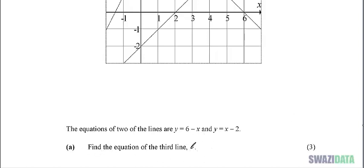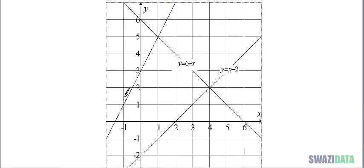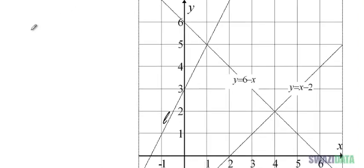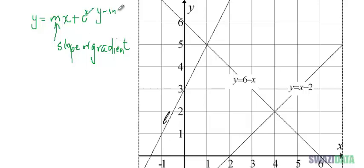So we need to find the equation of line l. The equation of a straight line is y equals mx plus c, where m is the slope or gradient and c is the y-intercept.